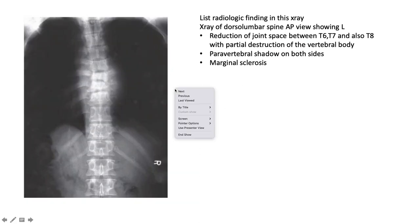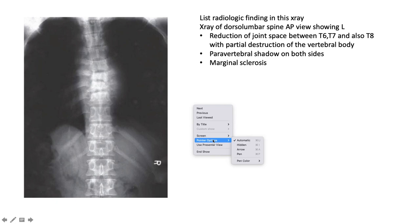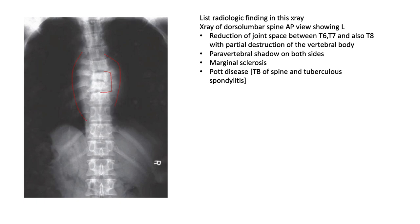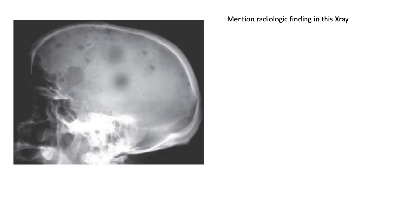This X-ray of the dorsal lumbar spine in AP view shows reduction of the joint space between T7-T8 and T8 with partial destruction of the vertebral body, with a paravertebral shadow and marginal sclerosis on both sides. This is Pott's disease — TB of the spine and tubercular spondylitis — a combination of arthritis and osteomyelitis induced by TB.